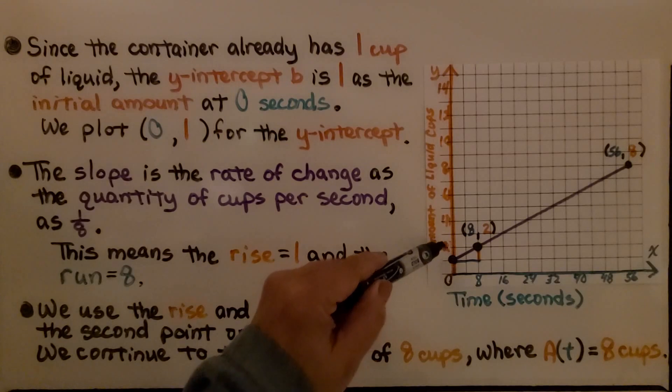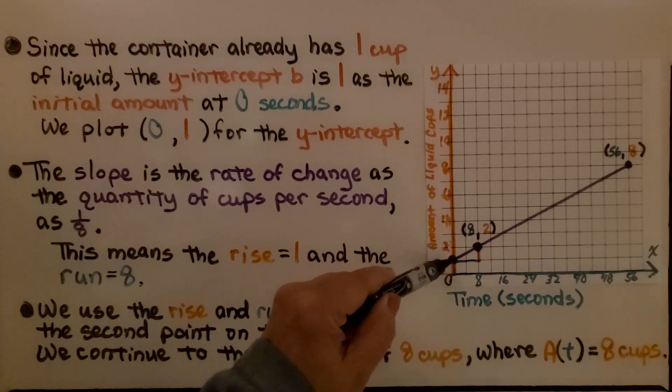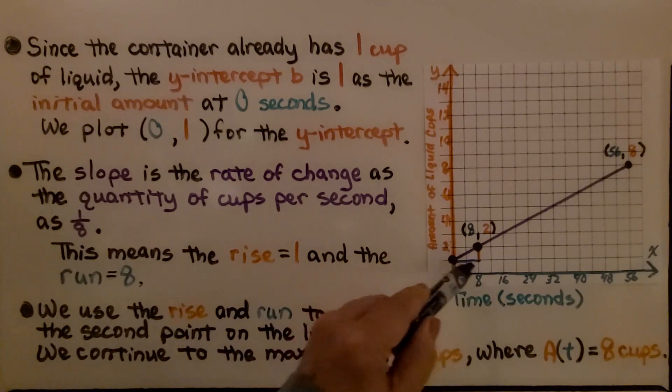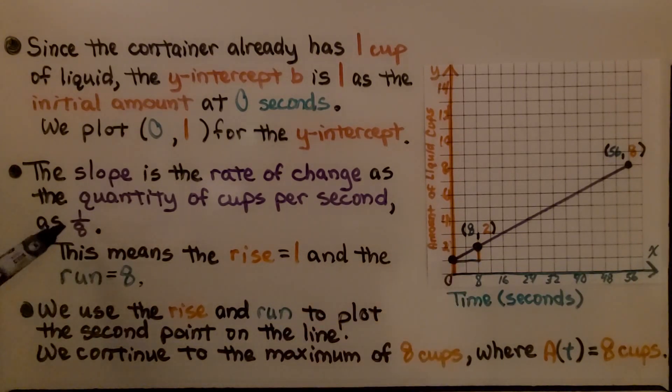Looking at our scale here, if that's 2 and that's 0, then that's 1. So we have a rise of 1 and if that's 8, we have a run of 8. We have 1/8th as our rate of change.